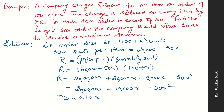Revenue equals price per unit into quantity sold, so revenue equals (20,000 minus 50x) into (100 plus x). By expanding this equation, we get revenue equals 20,000 plus 15,000x minus 50x squared.